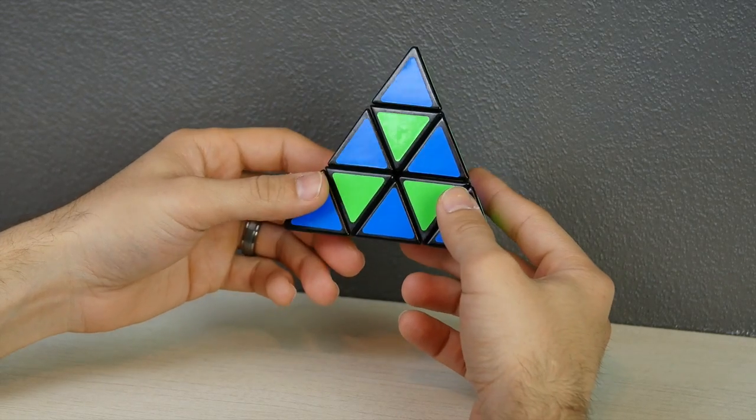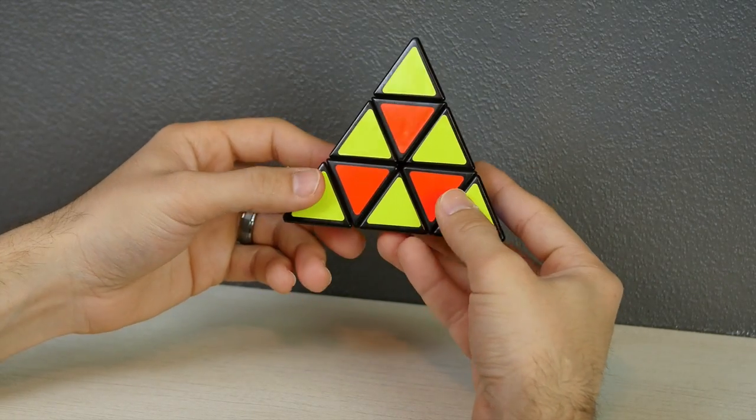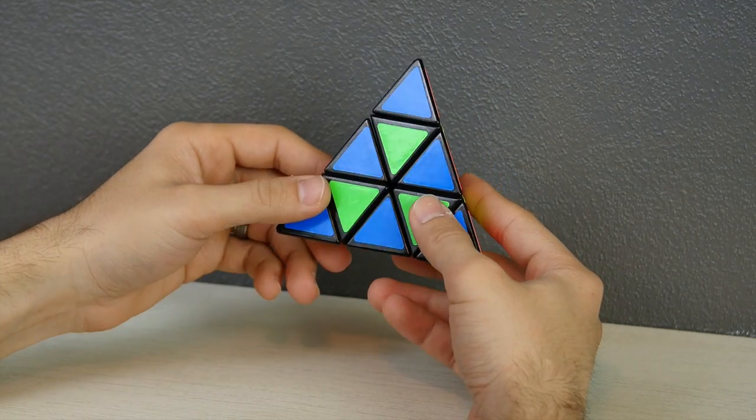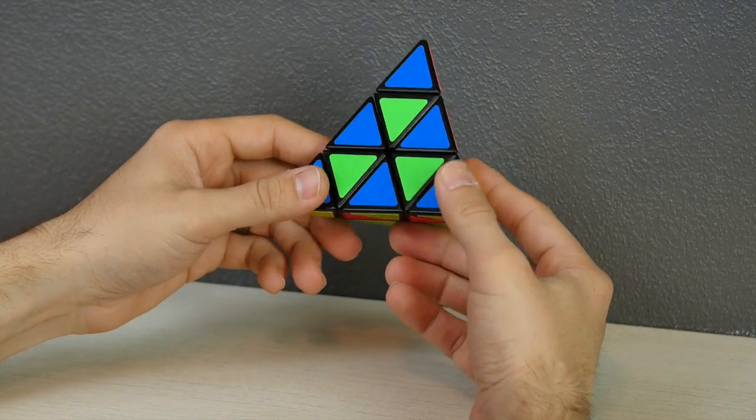To go back to the original solved status of the Pyraminx puzzle, we just have to do the same algorithm except opposite from what we did to get to the checkerboard pattern in the first place. Just go ahead and have any side facing you and then do this move.